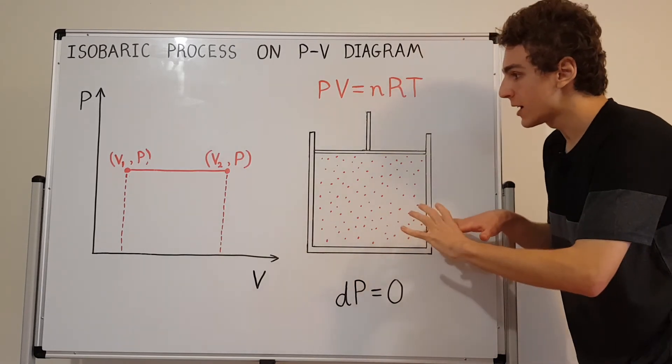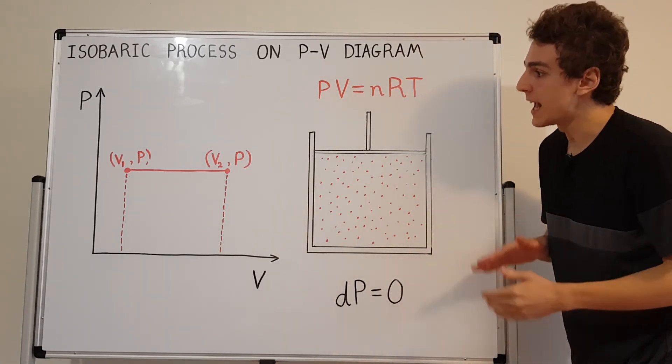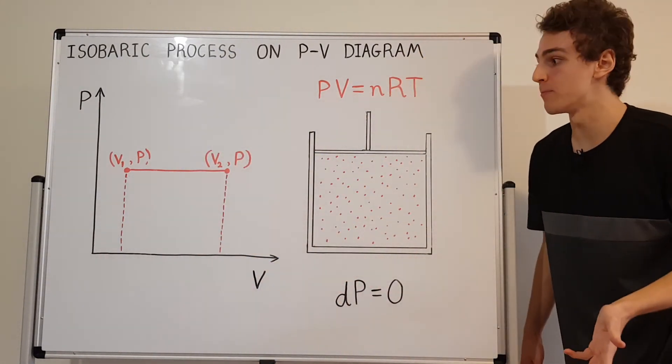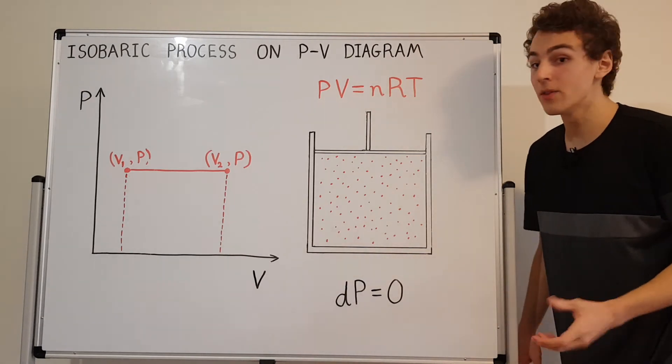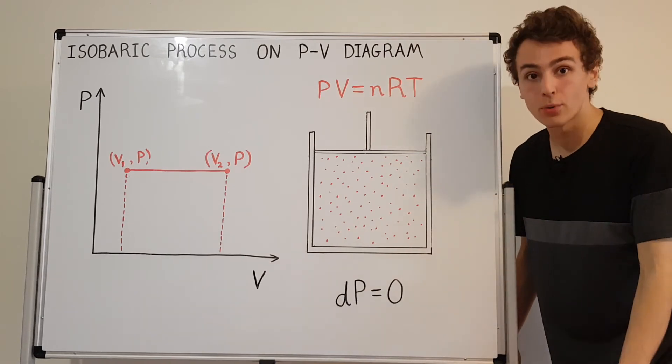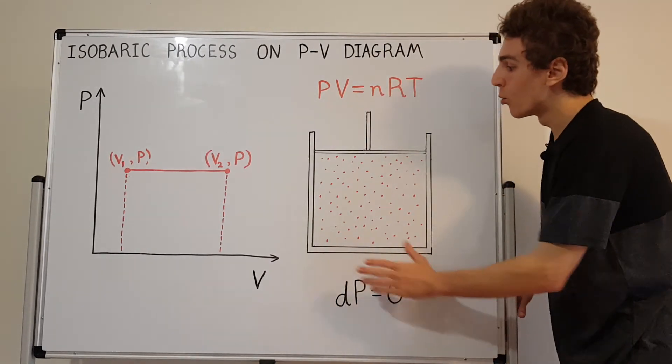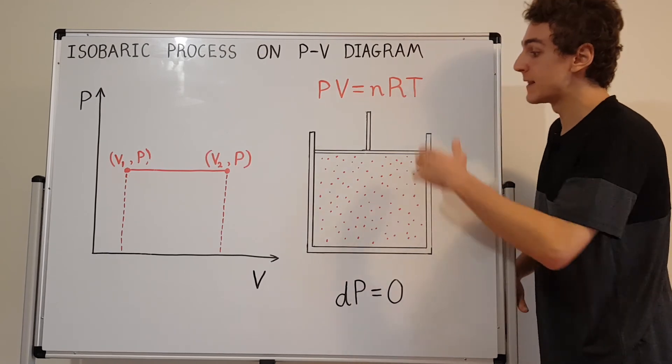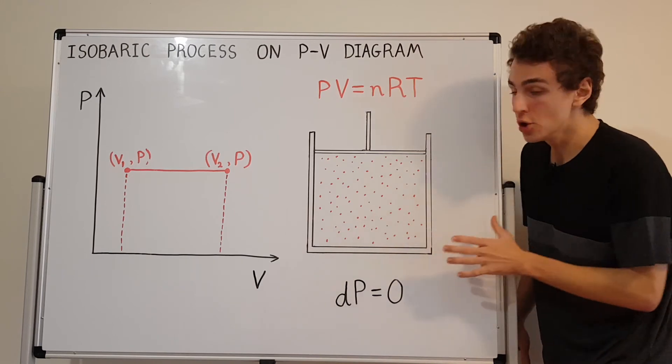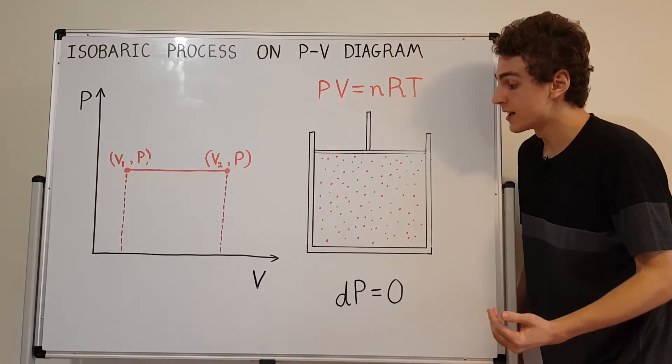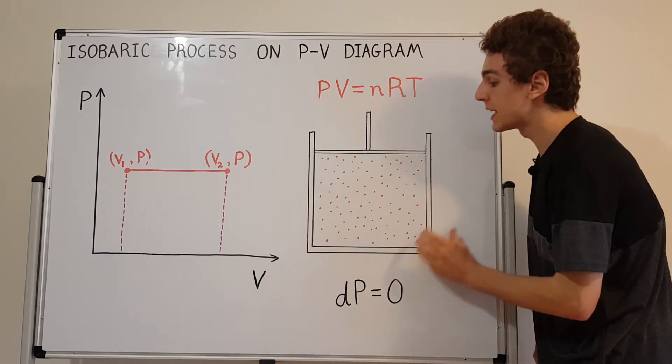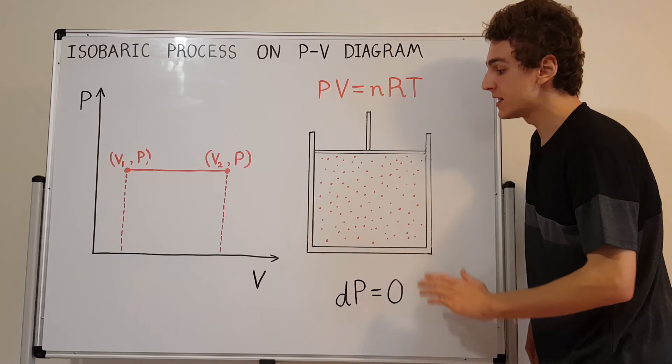What have we discovered with this isobaric process? Every horizontal line is an isobar on the PV diagram. The area underneath that curve corresponds to the work done during either isobaric expansion or compression. We've also looked at what this looks like in a physical system—this piston with a container. Keep in mind Q is non-zero, so heat can flow in or out. This is not a thermally isolated system.